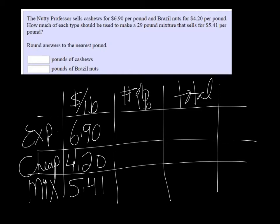Now the number of pounds, all we know about that is we want a total of 29 pounds. So we don't know how much of the expensive ones we have, we'll call it X. We don't know how much of the cheap ones we have, we'll call that Y.